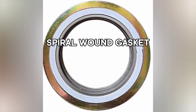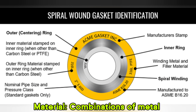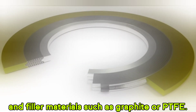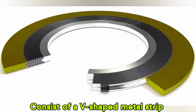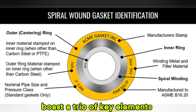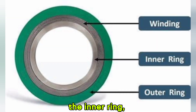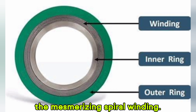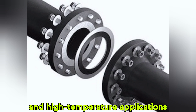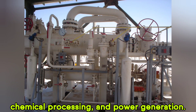Spiral wound gaskets according to ASME B16.20. Material: combinations of metal and filler materials such as graphite or PTFE. They consist of a V-shaped metal strip spirally wound with a filler material. Spiral wound gaskets boast three key elements: the inner ring, the outer ring, and the spiral winding. They are suitable for high-pressure and high-temperature applications in industries such as oil and gas, chemical processing, and power generation.